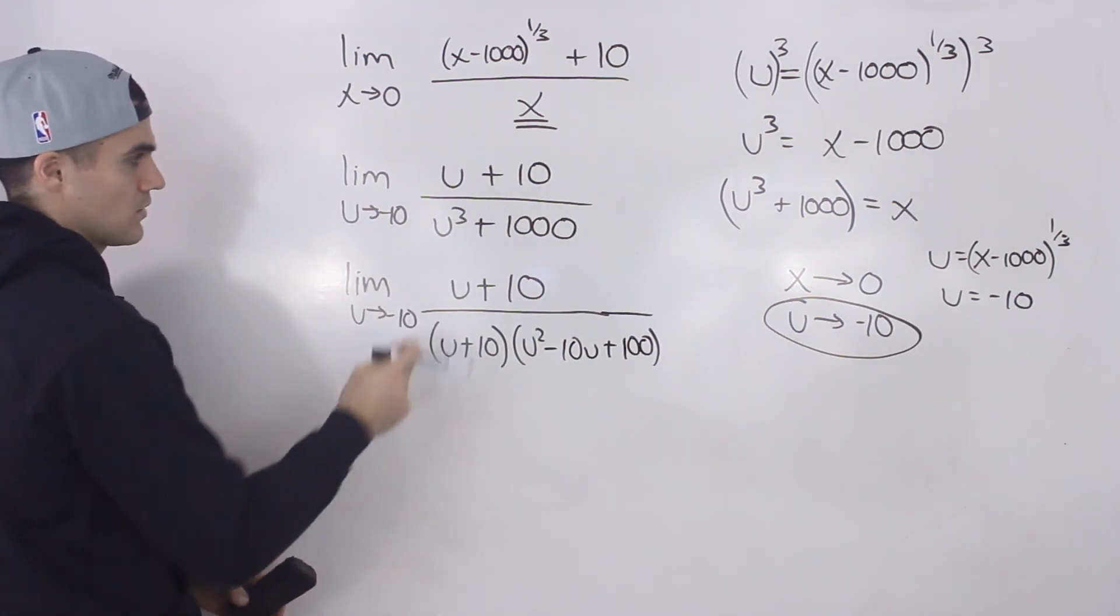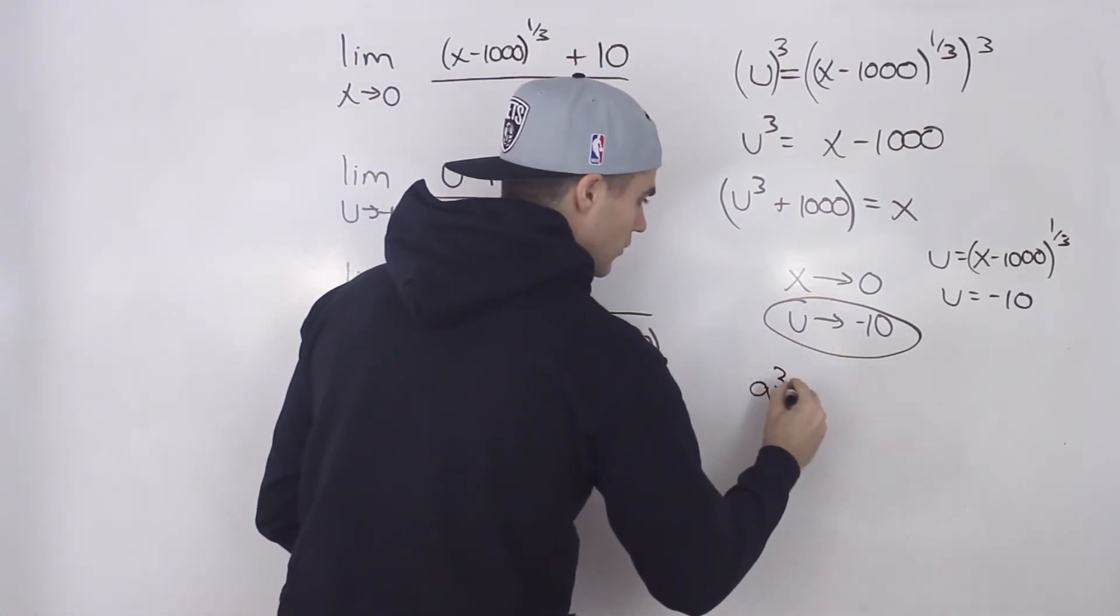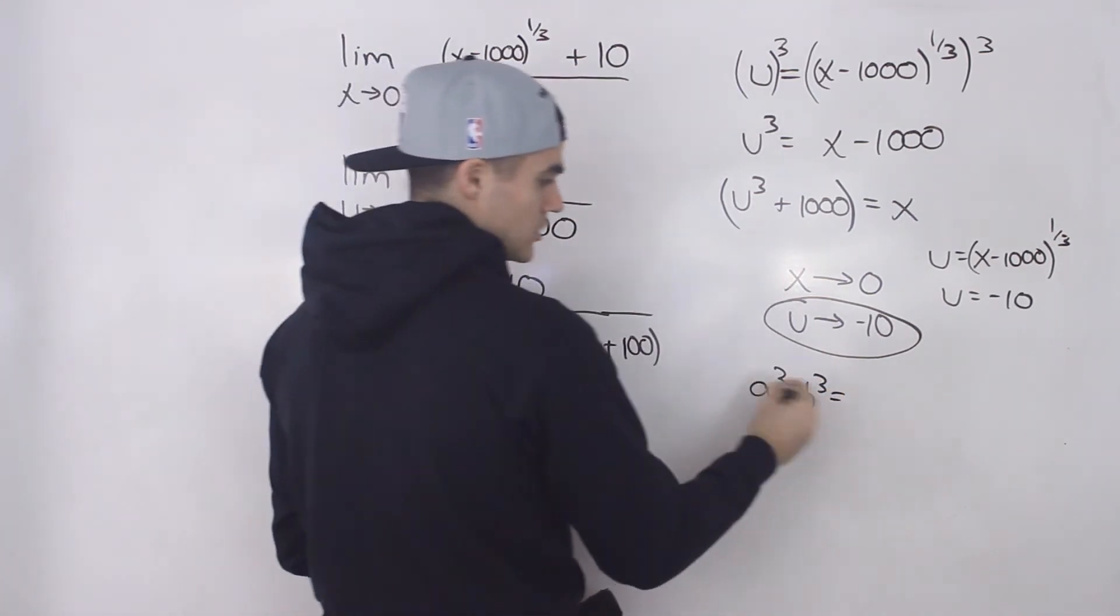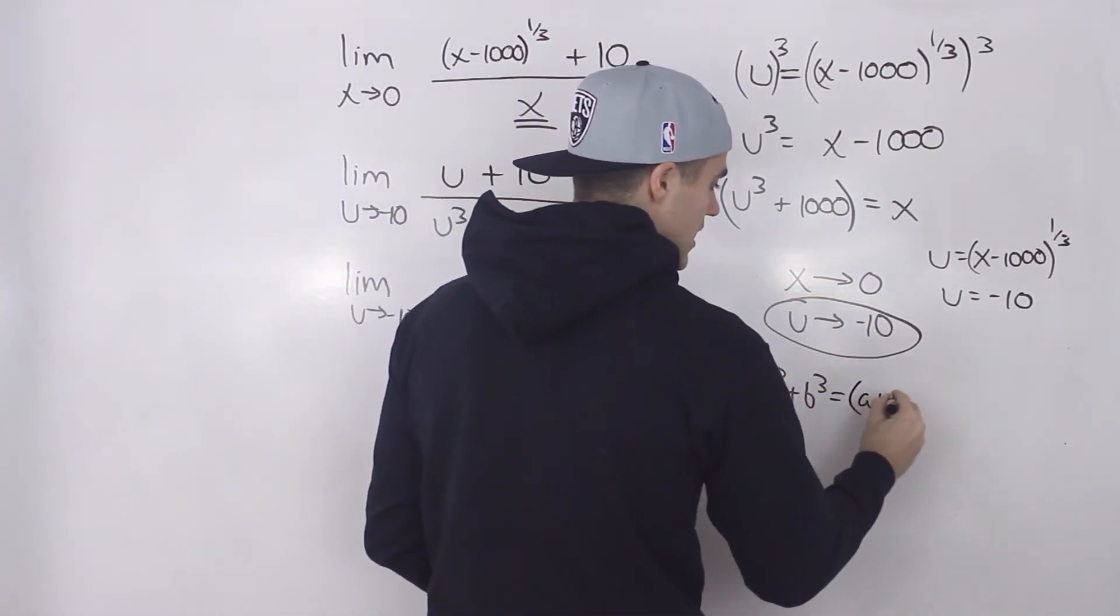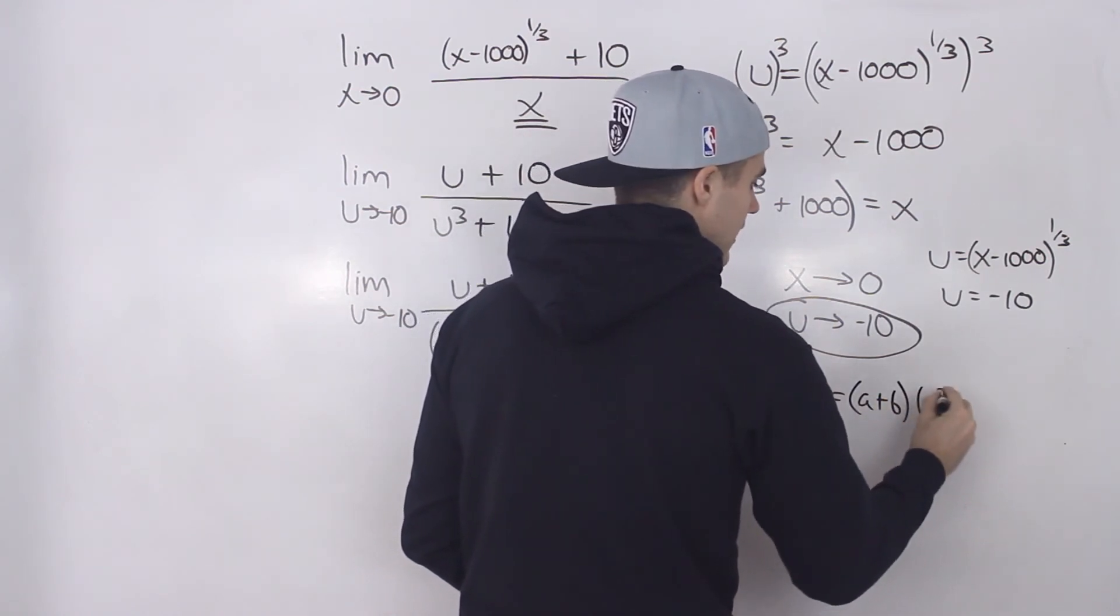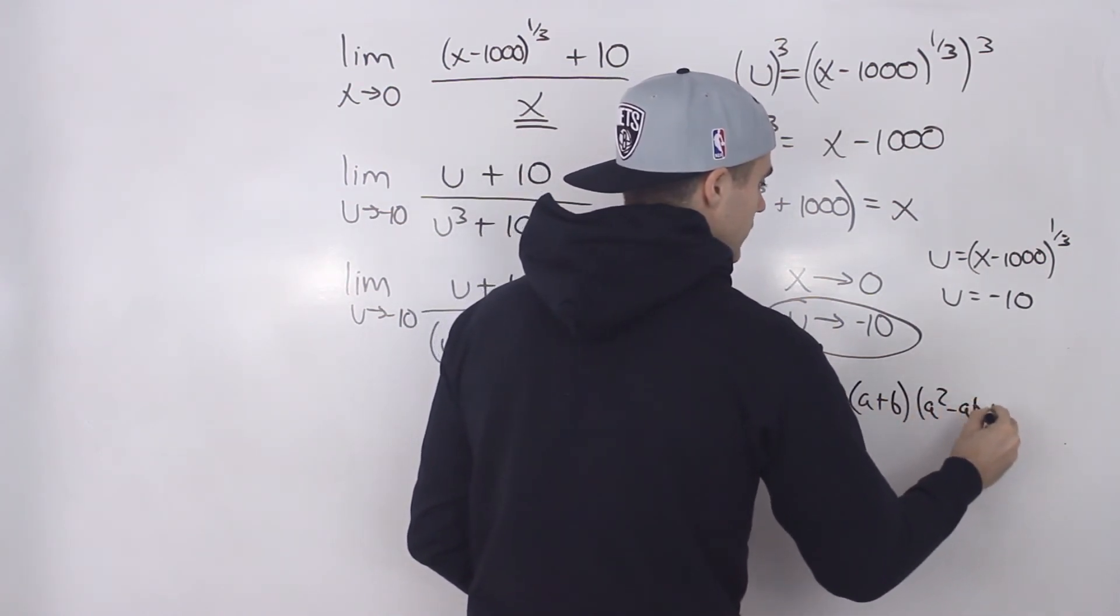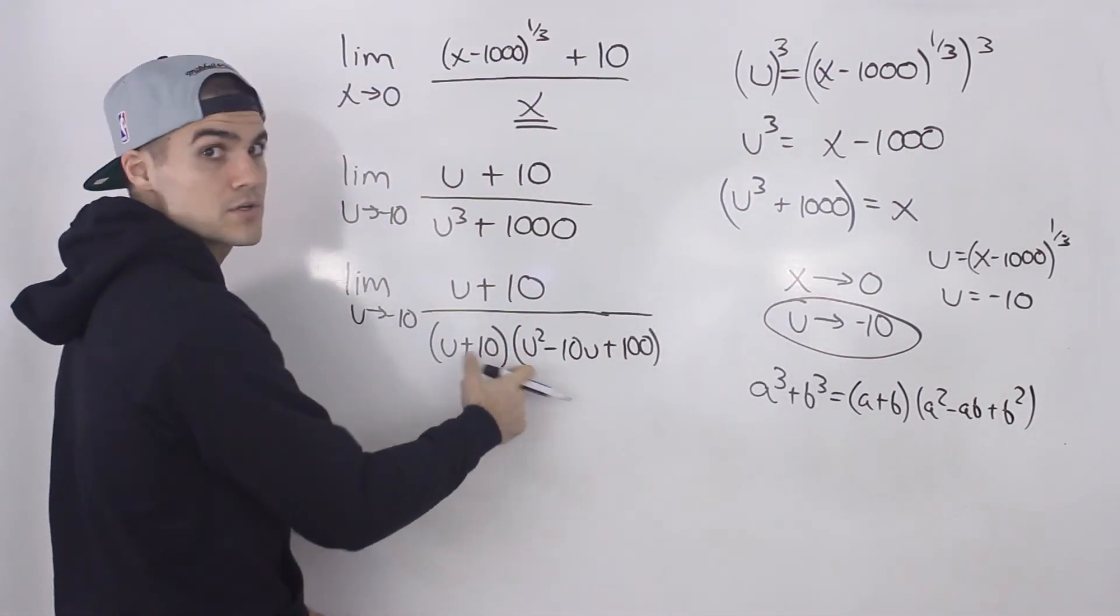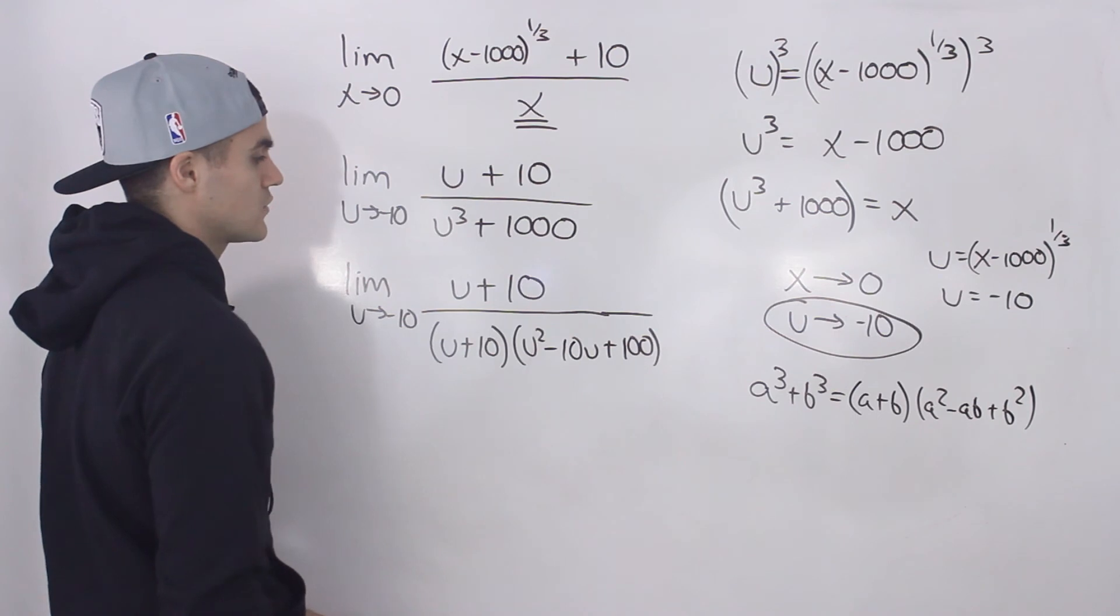Right? So if you remember, just in general, the sum of cubes formula: a cubed plus b cubed factors into a plus b times a squared minus ab plus b squared. So that's how we went from here to here. We just factored it as a sum of cubes.